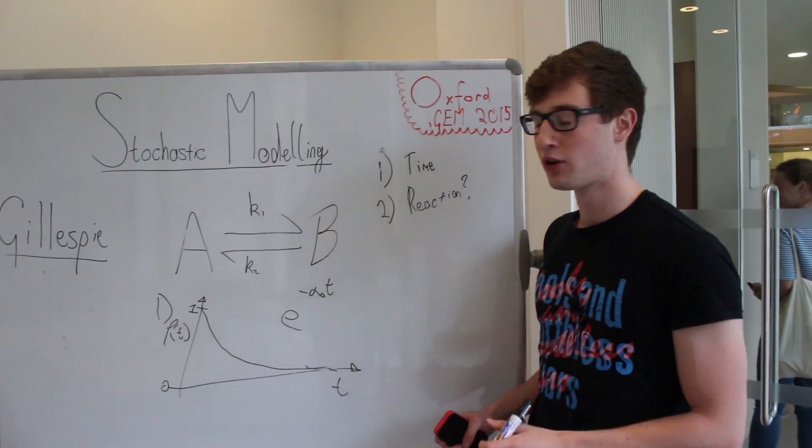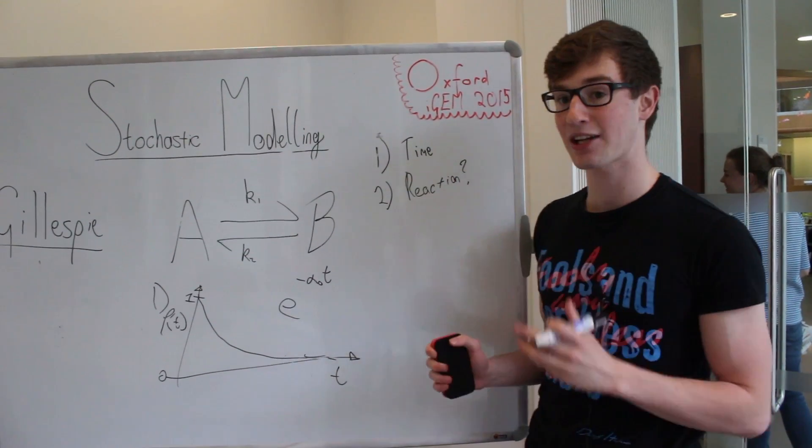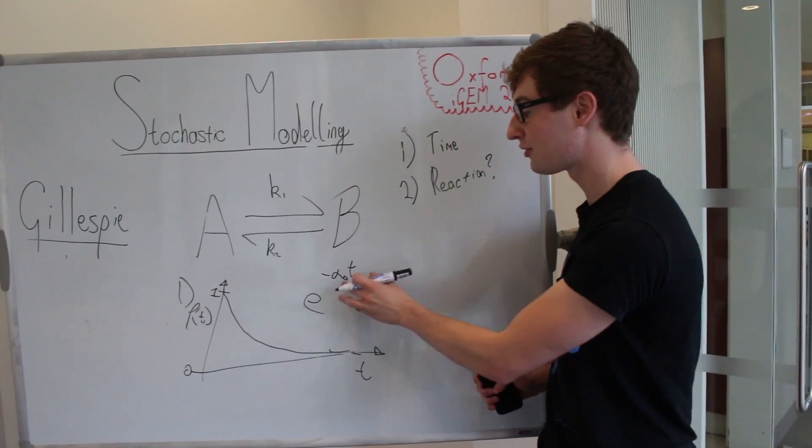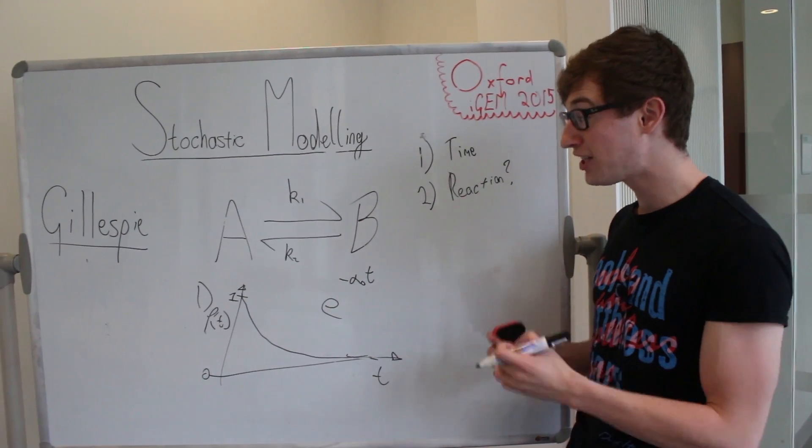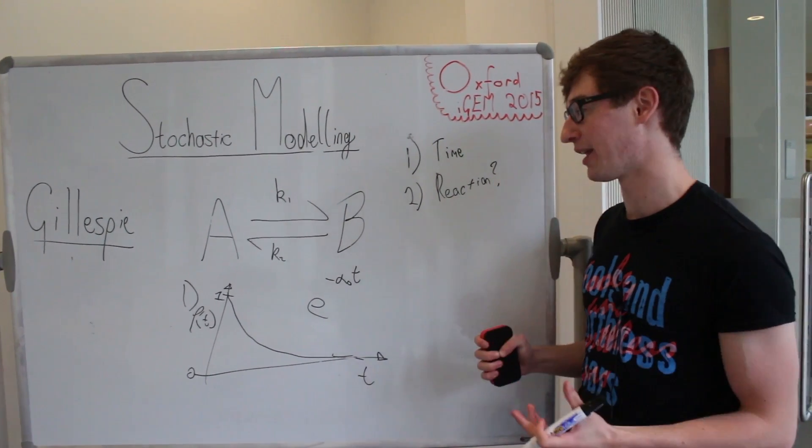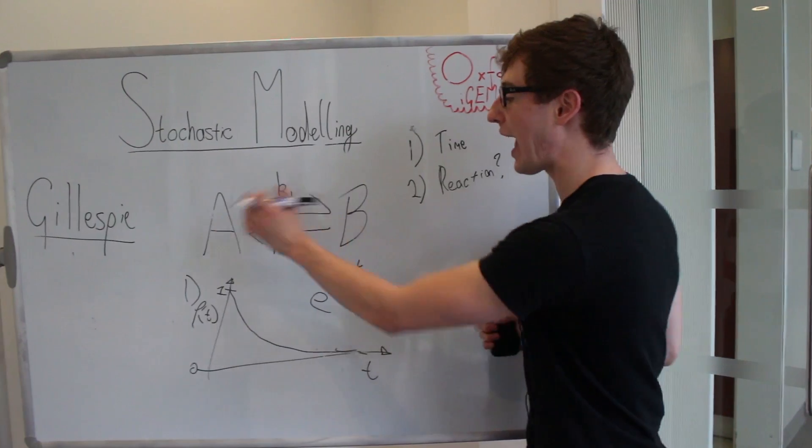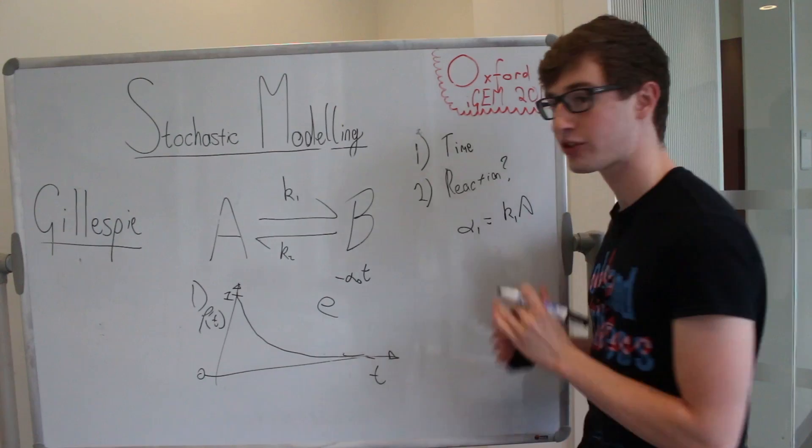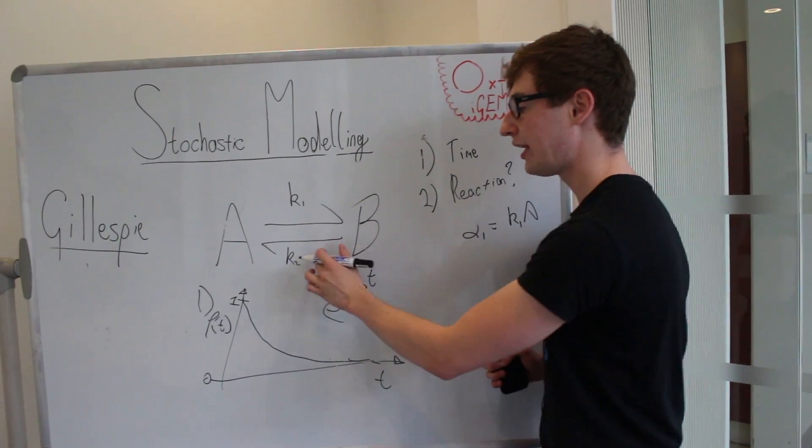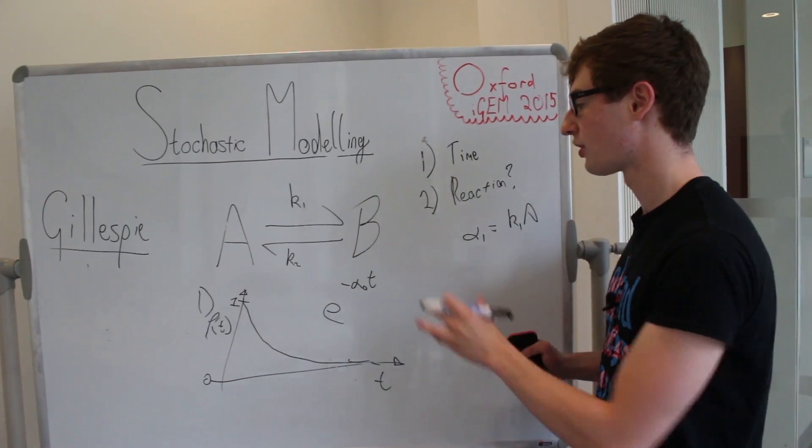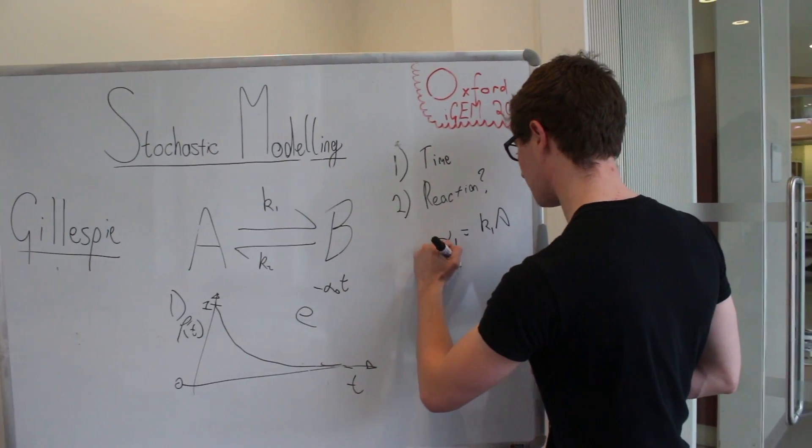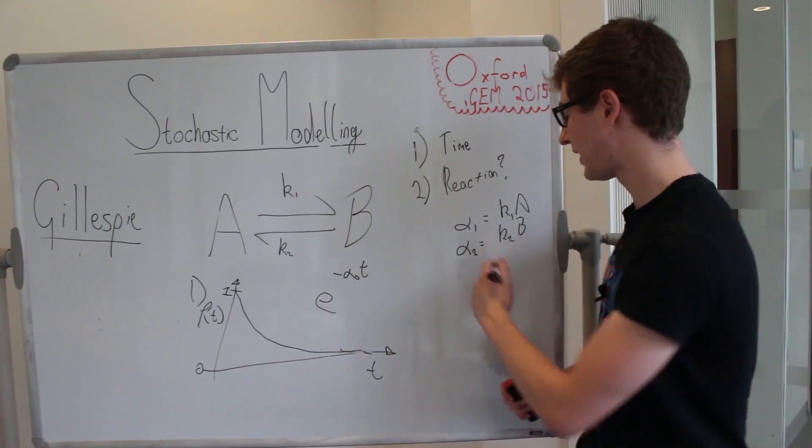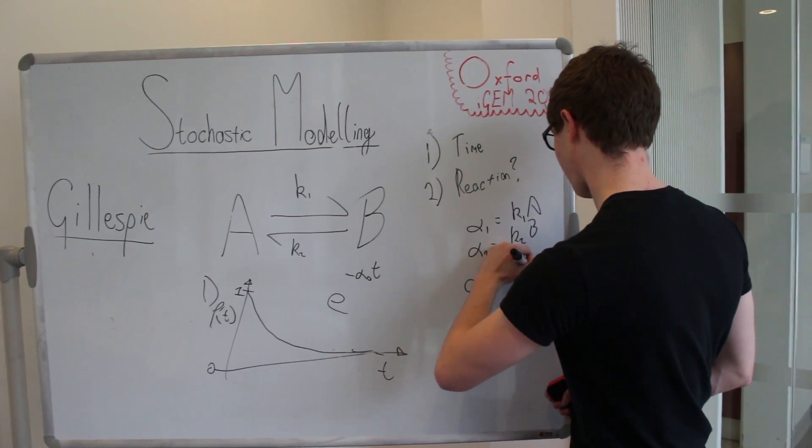What do we choose for alpha naught? Well, the more likely our reactions are to occur the steeper this is going to be and the larger alpha naught is. In fact what we say is alpha naught is the sum of the propensities where each propensity is the chance of each reaction happening. We would say that the chance of reaction A to B happening, I'll call alpha 1, is K1A just like we had in our equations a moment ago. And the chance for B to turn into A, the propensity alpha 2, we will say is K2B. And so alpha naught would be the sum of these two, K1A plus K2B.